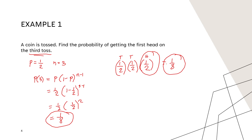So one half times one half times one half equals one over eight. This confirms the formula and the manual method give the same answer.